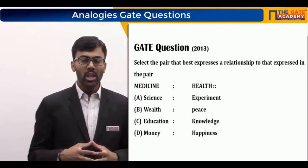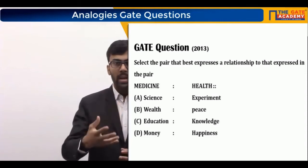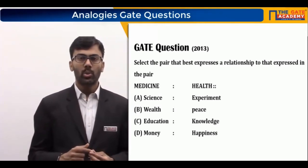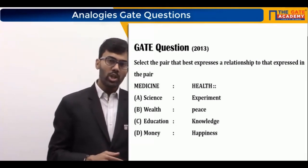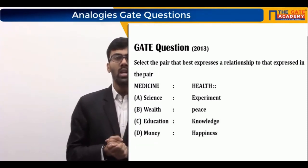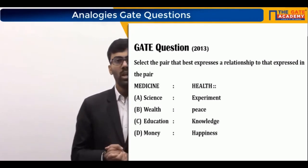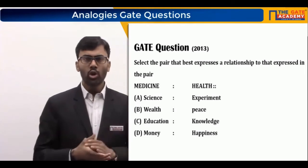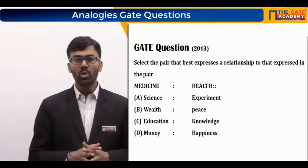Option C is 'education : knowledge.' The more education a person has, the better that person's knowledge. The higher the level of education attained, the more knowledge in that field. Greater education leads to greater knowledge — this has a very similar relationship to medicine and health, because medicine is used to improve health and education is used to improve knowledge. Option D, 'money : happiness,' has no logical relationship. The correct option is C.